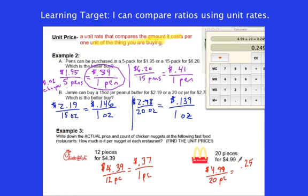And that's going to be $0.25 for one piece. So, McDonald's is less expensive.